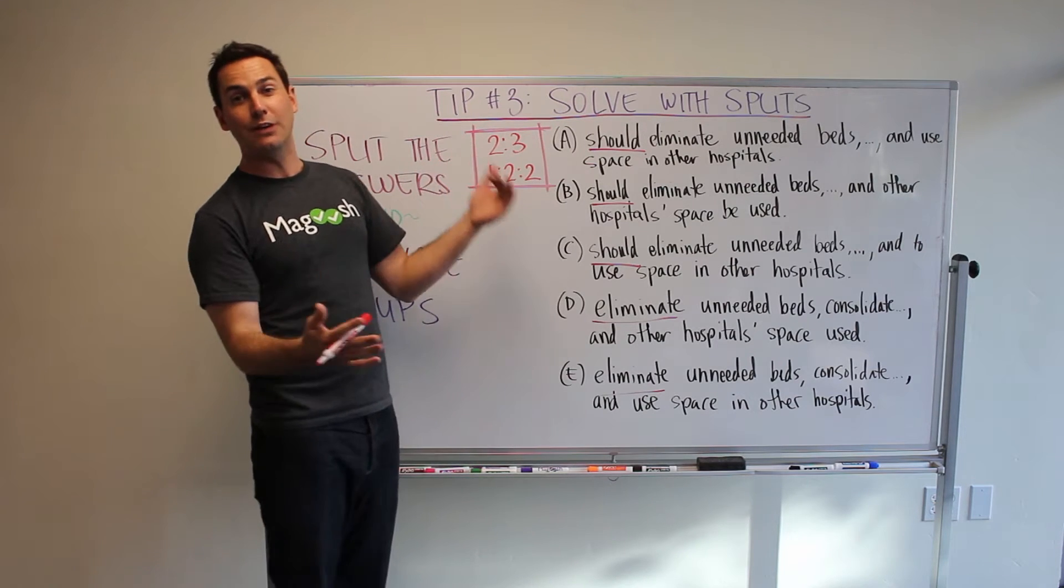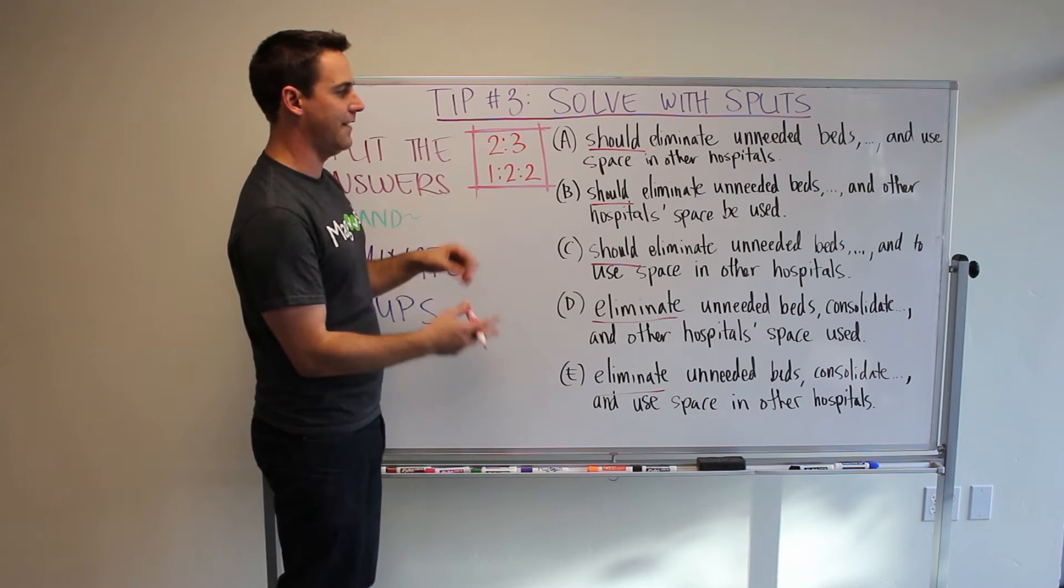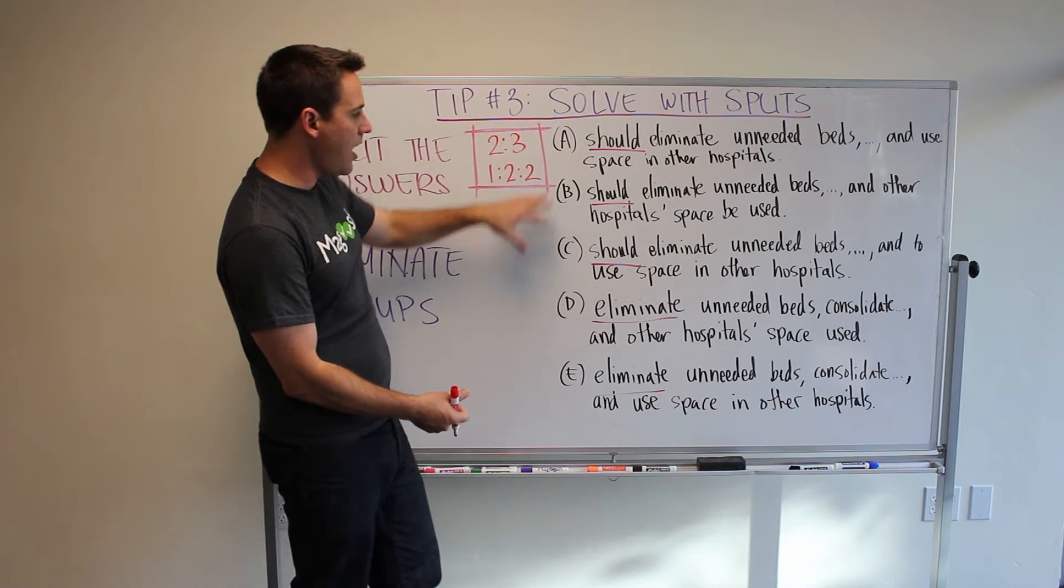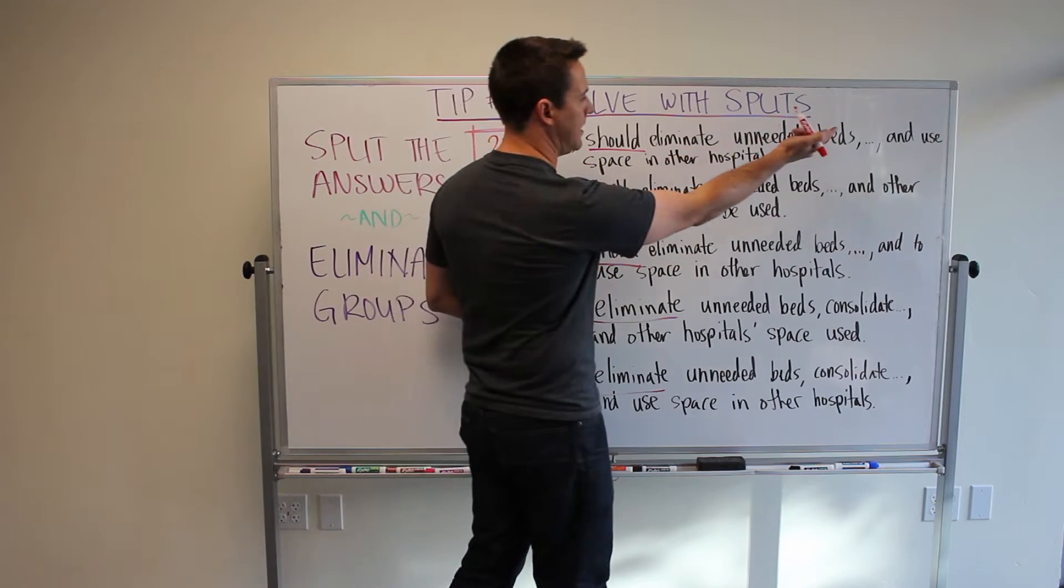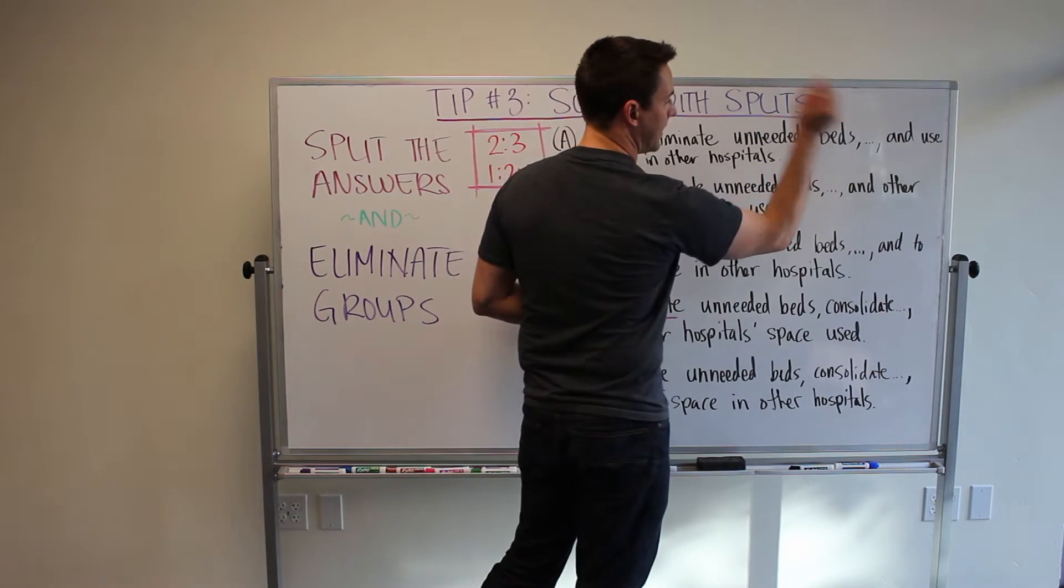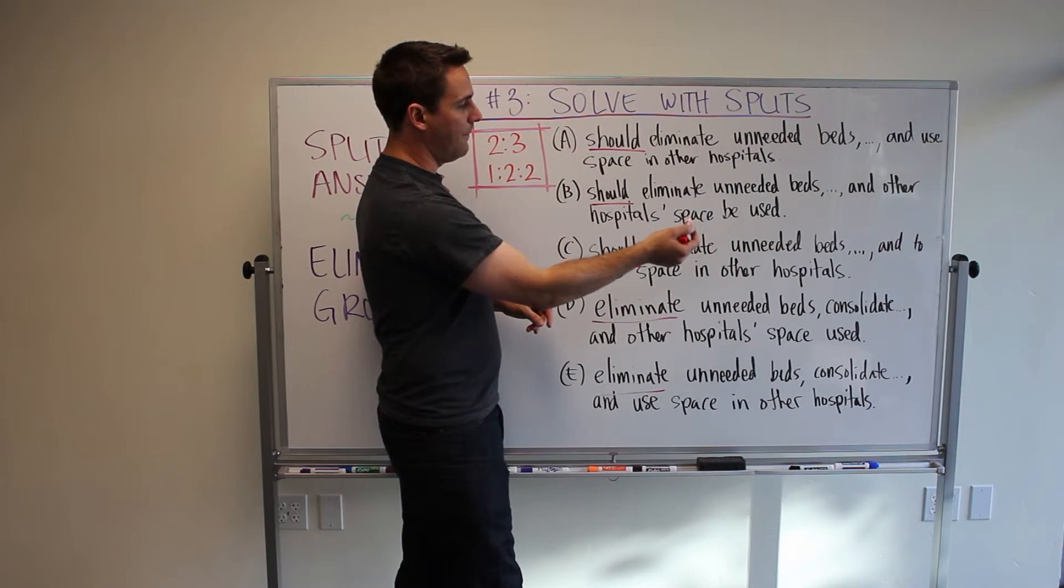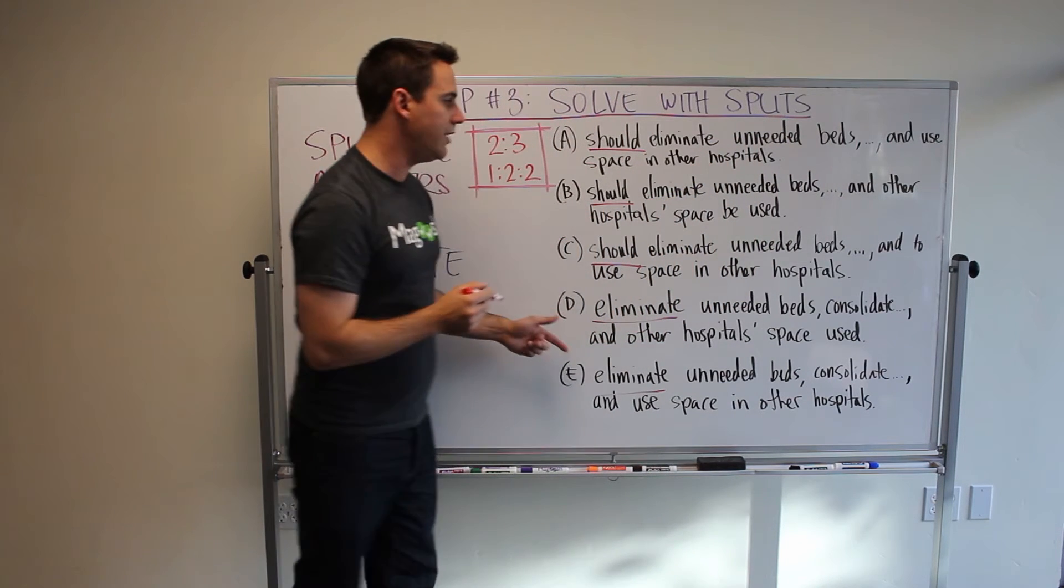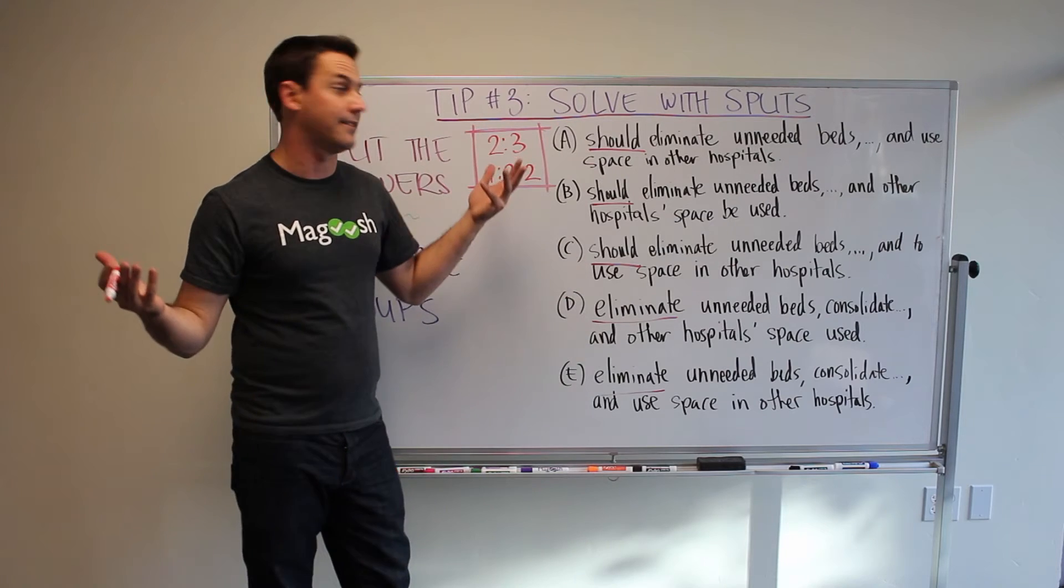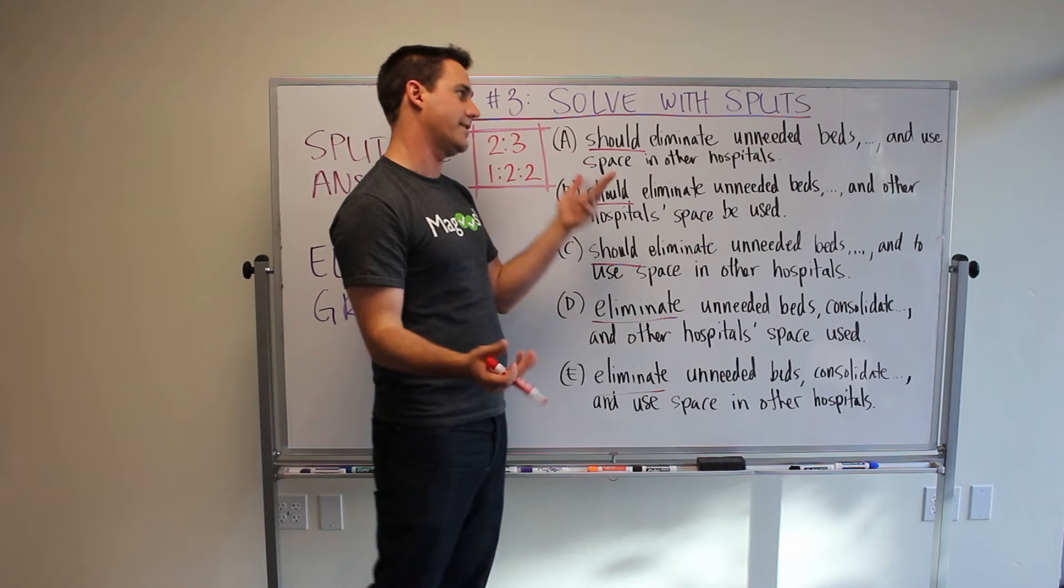But let's continue and look for other splits, I won't dive too deeply. So, also A, B, and C, everything is the same at the very beginning. It should eliminate unneeded beds and then the dot, dot, dot here means that it's the same. And then I can see at the end stuff is changing and I do notice now too that my answer choices have a list. It's a list of things, three things being listed.